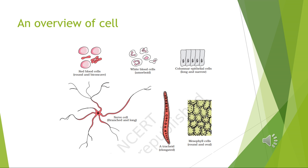This diagram shows different types of cells — this is showing a tracheid, and this is showing a nerve cell, which is very large and may go up to one meter. Also shown are columnar epithelial cells and mesophyll cells.